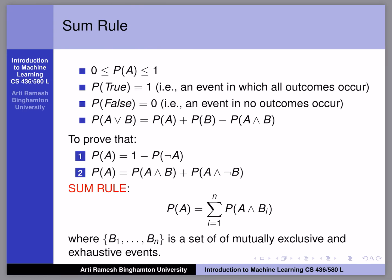From that, the sum rule follows. So sum rule is used to prove that P of A equals 1 minus P of not A, where A and not A here, if you think about it, are mutually exclusive events.